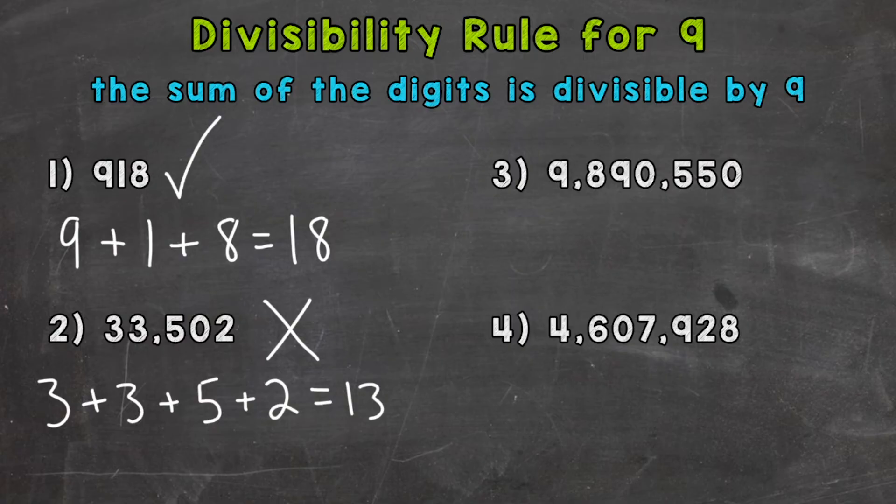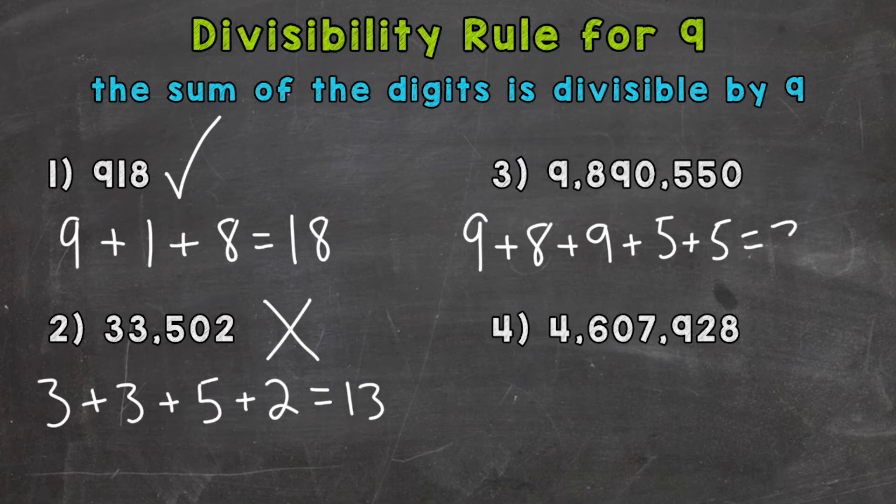On to number 3, where we have 9,890,550. So let's find the sum 9 plus 8 plus 9 plus 5 plus 5.